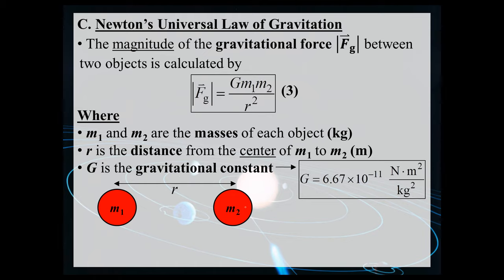Going back to the initial question: if there's a gravitational force of attraction between me and everything in the universe, why doesn't my stapler fly across the room and hit me in the head? You have to remember there are forces of attraction between the stapler and other objects too. The force gets really big the bigger the masses are — there's a direct relationship between Fg and M1 and M2. The mass of the Earth is huge, so Earth's mass dominates, making the net force on objects point straight down towards the center of the Earth. The stapler is not going to hit you.